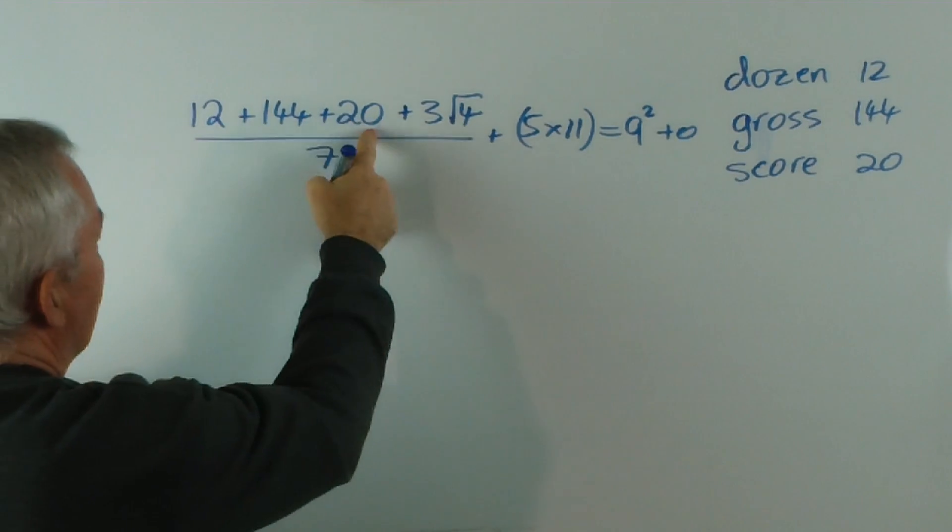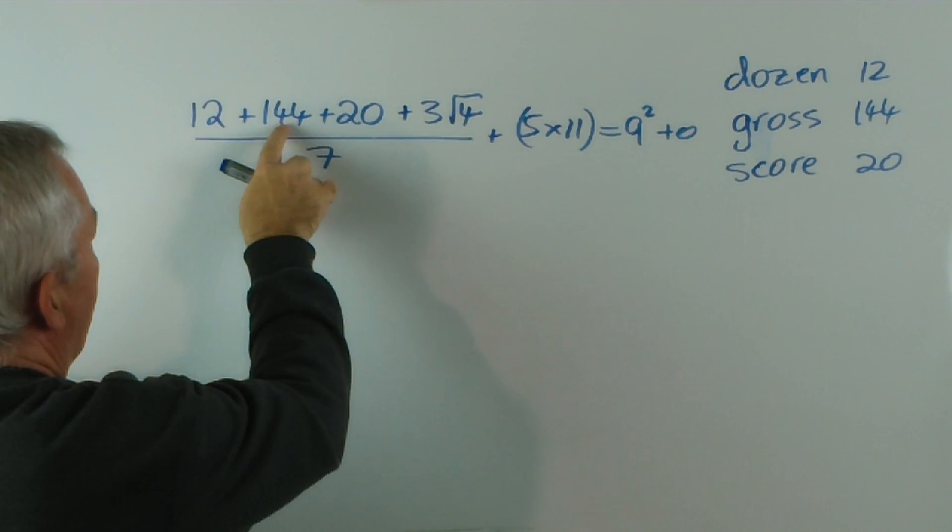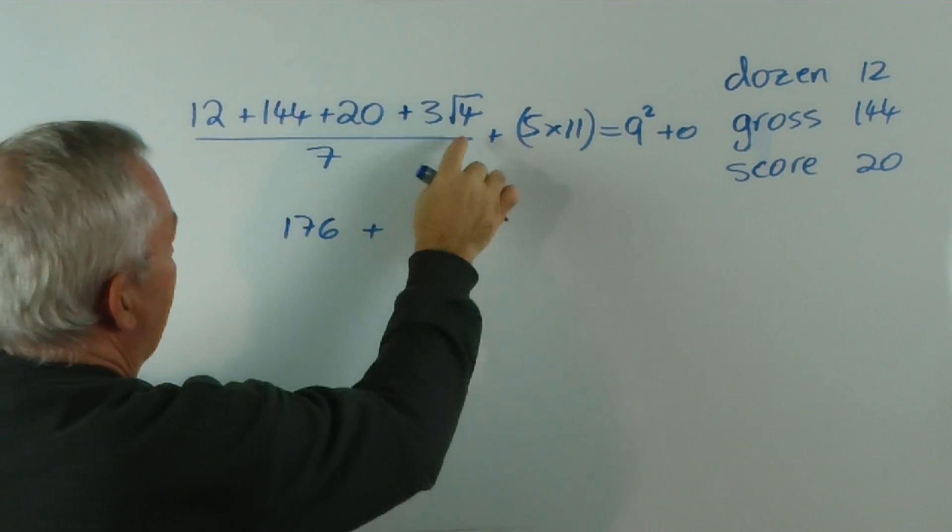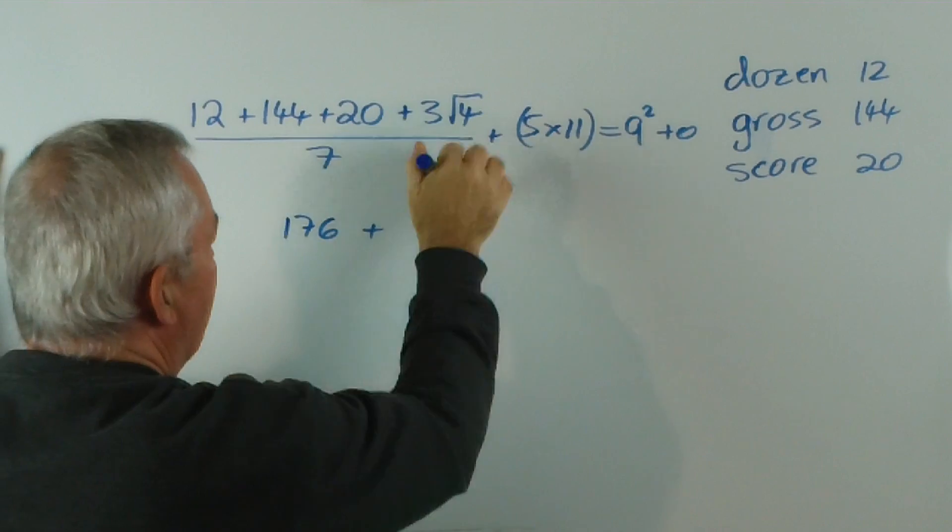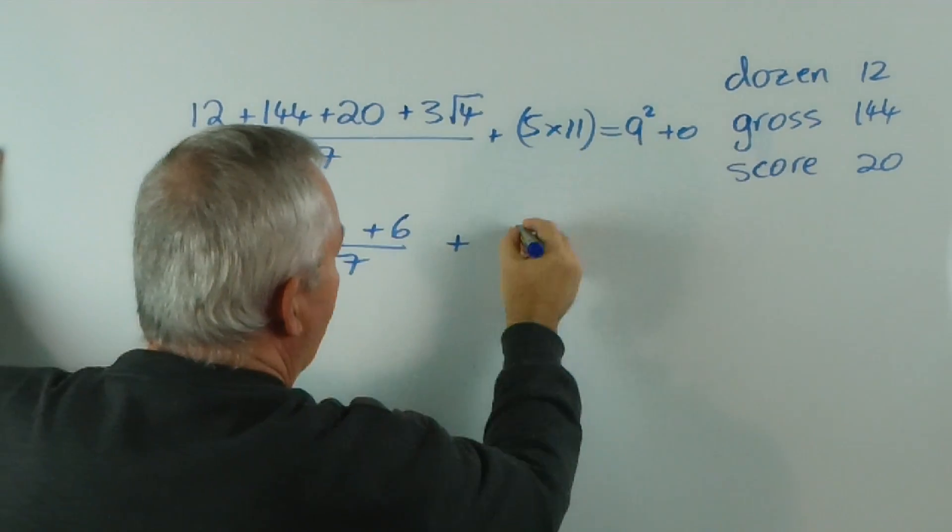A dozen, a gross and a score. If we add these, we get 156, 176, the square root of four is two, and three twos are six. Five elevens are 55.